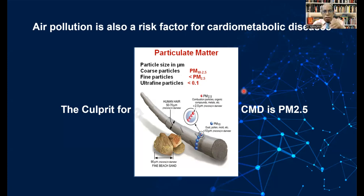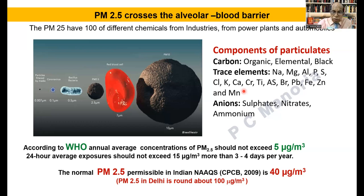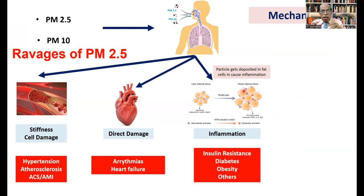Air pollution is also a risk factor for cardiometabolic diseases, and the culprit for this is particulate matter 2.5. This PM2.5 is powered to cross the alveolar-blood barrier, reaches the systemic circulation, and produces several distressing effects on various parts of the body. The normal PM2.5 limit in India is 40 micrograms per cubic meter, whereas as per WHO it is only 5 micrograms per cubic meter, but in most cities like Delhi it is near about 100 micrograms per cubic meter. When PM2.5 particles enter the vessel wall, they make it stiff, result in hypertension, initiate and perpetuate inflammation, result in development of atherosclerosis, and acute myocardial infarction.